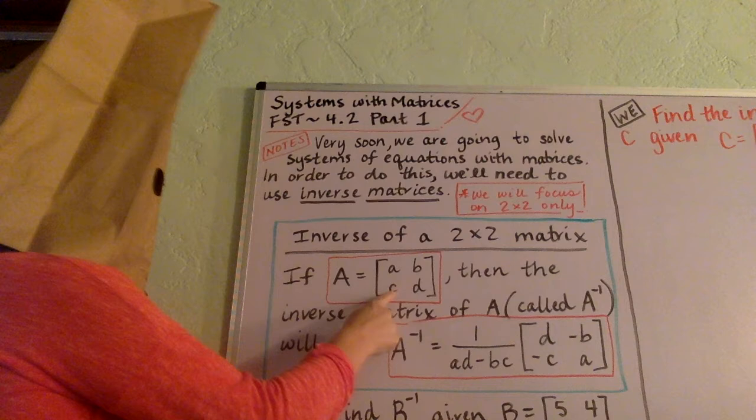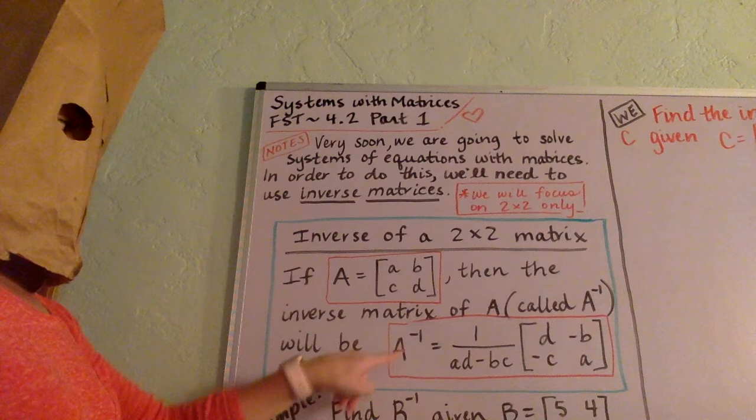If you start out with whatever is here, let's call this lowercase a, lowercase b upper right entry, lowercase c lower left entry, and lowercase d lower right entry.